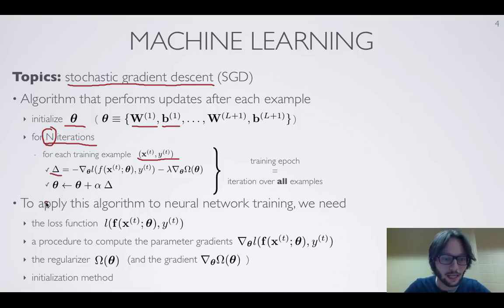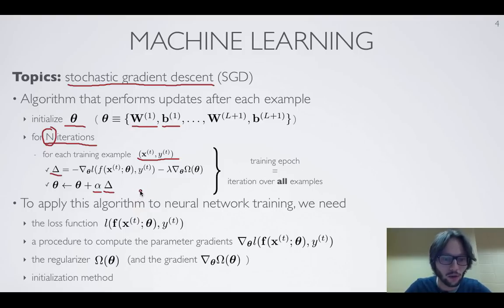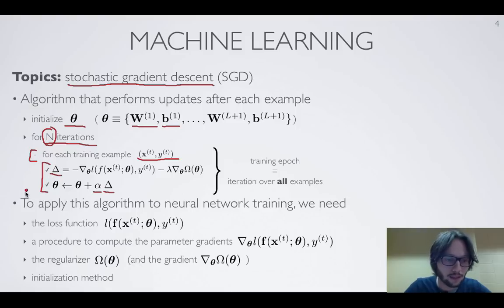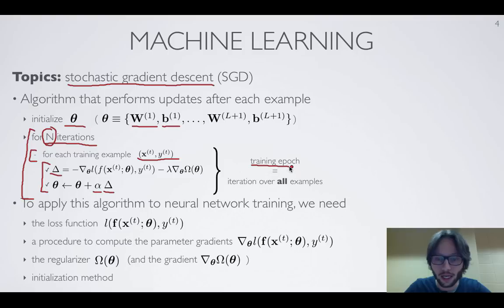We call this direction delta. Then we update the parameter by adding a step size or learning rate alpha — another hyperparameter — times this direction delta. So we're taking one step in the direction most likely to decrease the sum of the loss plus regularizer for the current training example. We repeat this for each training example in the training set, and then repeat the whole loop n times, which is the number of iterations or training epochs over all training examples.